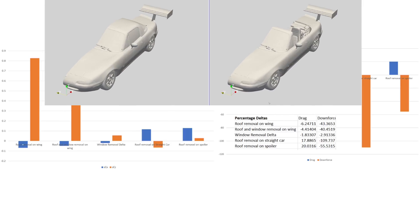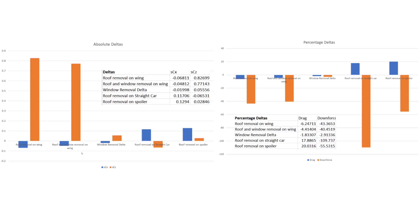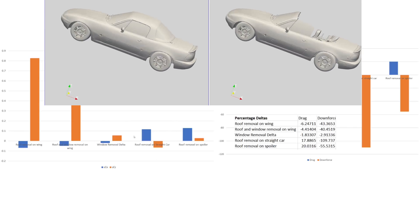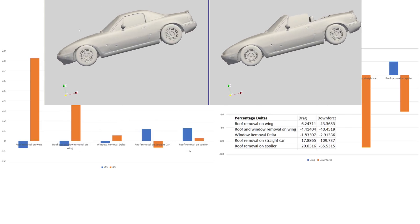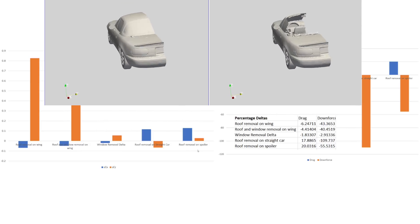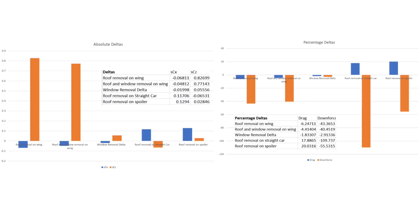So our five different deltas that we've got here are: first one is the roof removal keeping the wing on. Next one is removing the roof and the side windows whilst leaving the wing on. Then we have the difference of changing the side windows out, the window removal delta. Then our last two are our reference deltas - the removal of the roof just on the straight car with no rear wing, no rear spoiler, and then our last delta is removing the roof with a boot lid spoiler. In terms of sign convention, more downforce is negative on an absolute delta, so being up here means we're losing downforce and we're gaining downforce down there. For percentage deltas, it's the other way around for downforce - going down means we're losing downforce. As far as drag goes, going down is reducing the drag on both plots, and going up is increasing the drag.